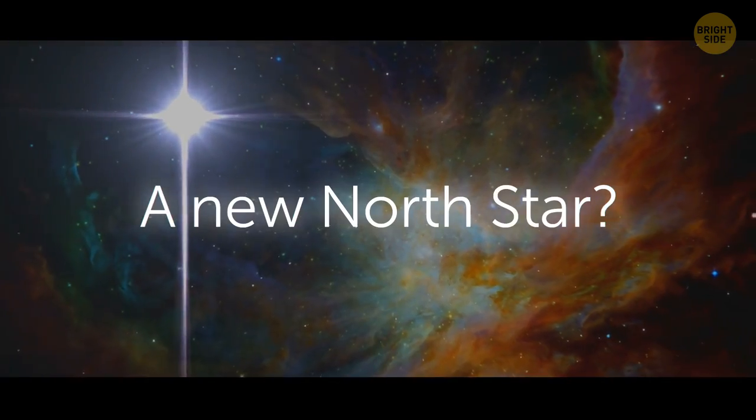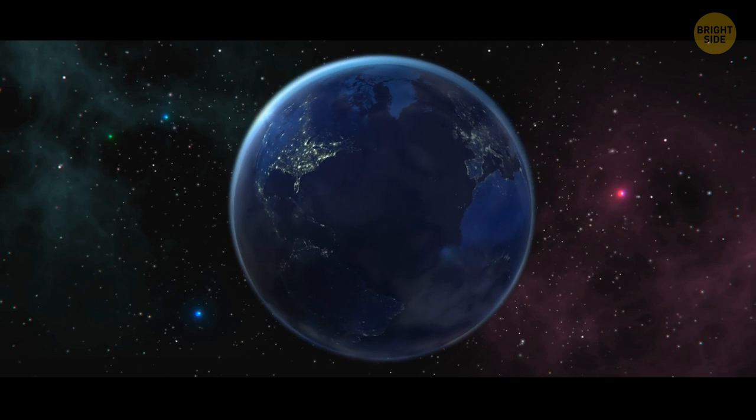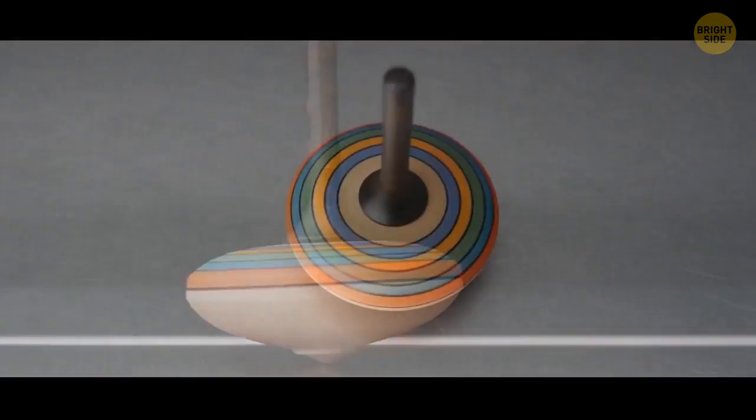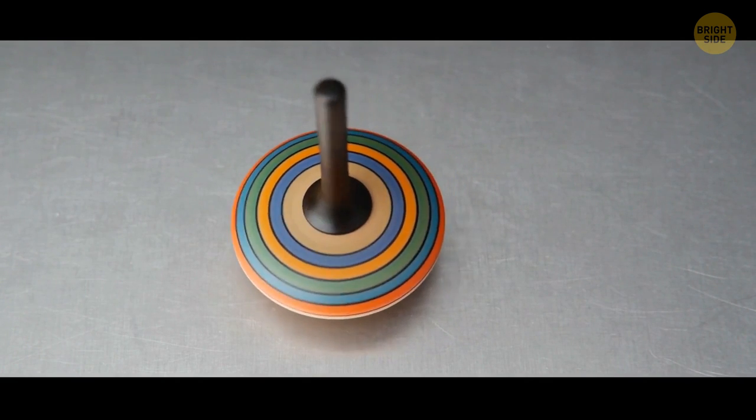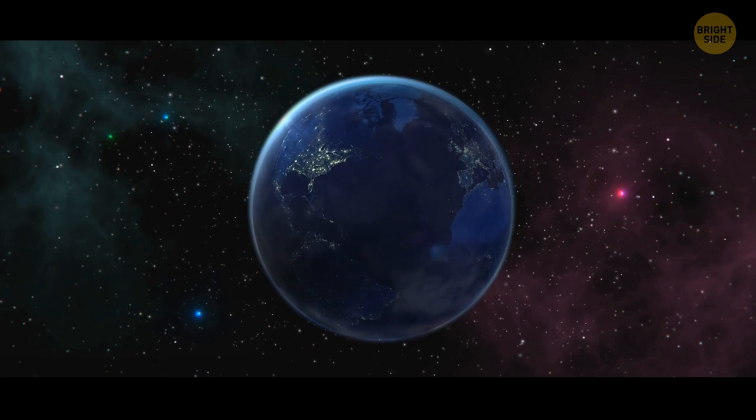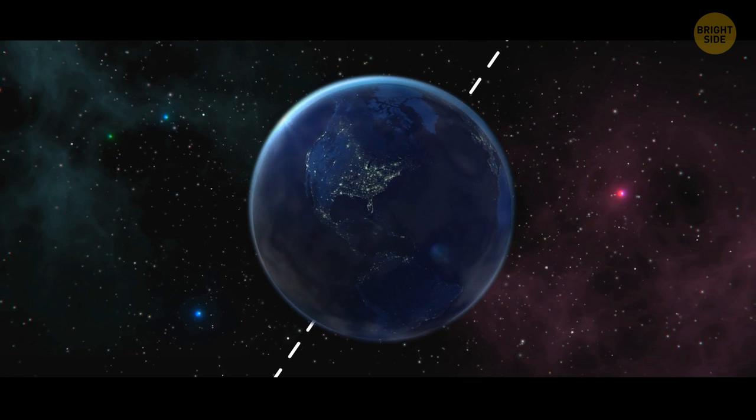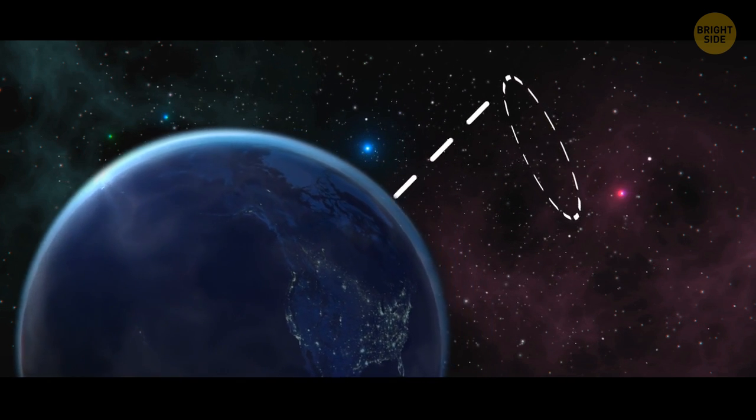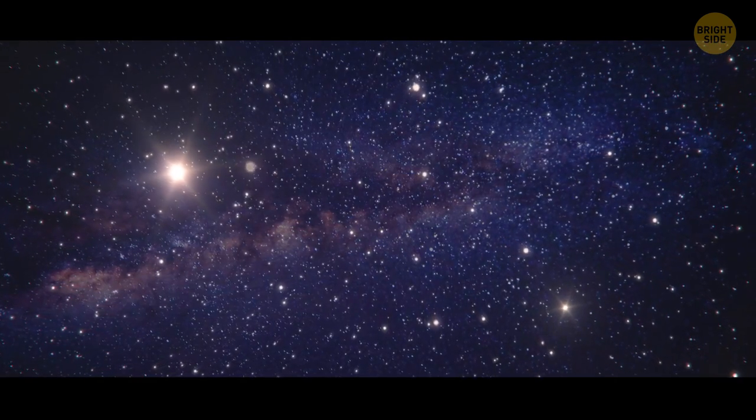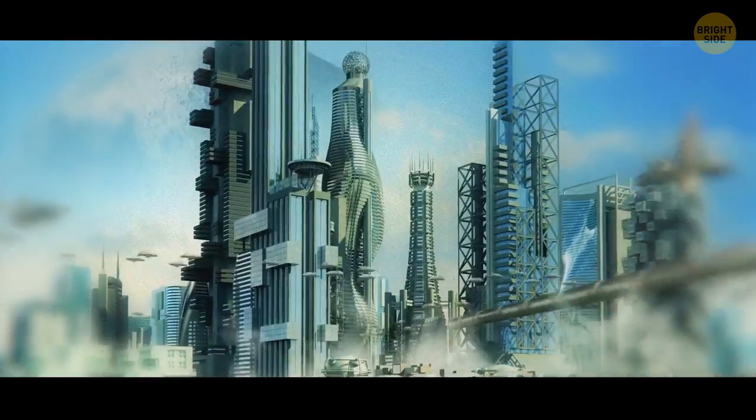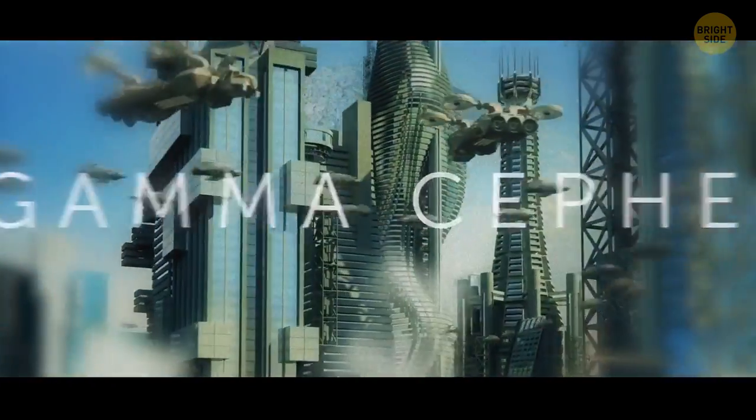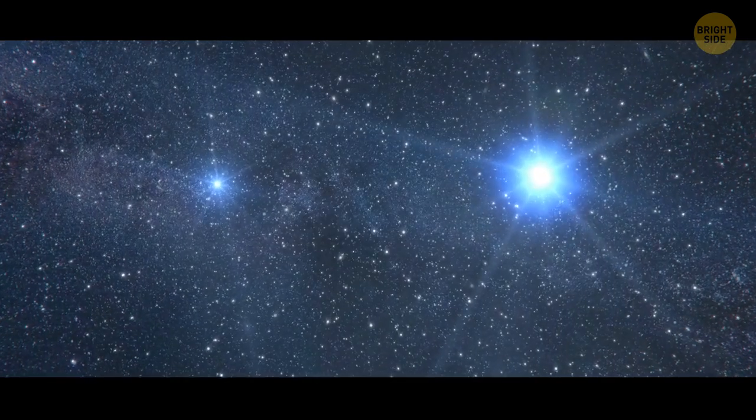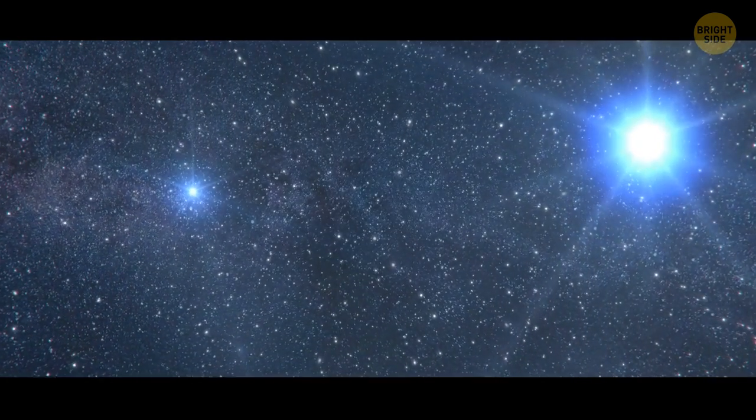A new north star? The Earth spins like a top. Watch one of these toys closely, and you'll see how its tip starts to draw circles in the air. The Earth's axis, an imaginary line going through the poles, goes full circle once every 26,000 years. It points at different stars along the way, thus changing the north star. By the year 3000, the Gamma-Sephi star will share this title with Polaris, as the Earth's axis will point right between them.